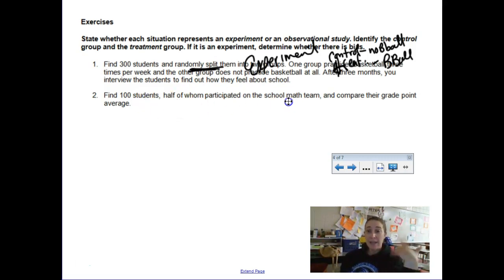We have 100 students, but I know a lot of these hundred students, 50 of them are on the math team. I didn't put them on the math team, they just are on the math team. I'm going to compare their grade point averages to the kids who are not on math team. So this is called an observational study. I'm not doing anything to either of the children's groups, I'm not making them do something, I'm not trying to influence their grade point average.